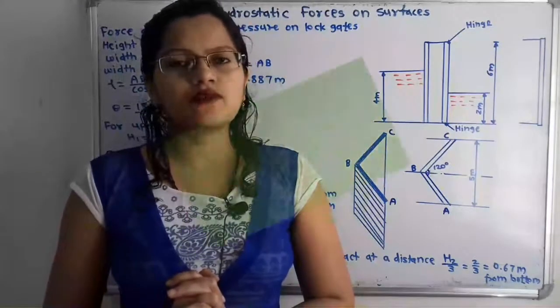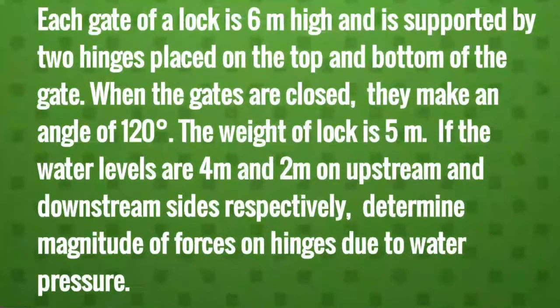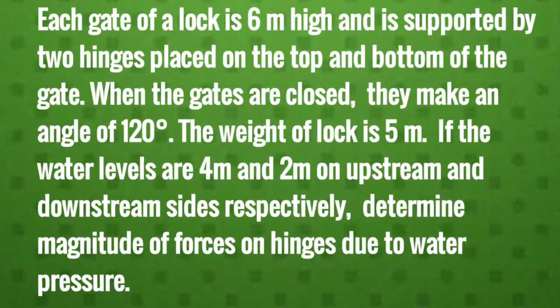First I will read what is the given problem. Each gate of a lock is 6 meters high and is supported by two hinges placed on the top and bottom of the gate. When the gates are closed they make an angle of 120 degrees. The width of the lock is 5 meters. If the water levels are 4 meters and 2 meters on the upstream and downstream sides respectively, determine the magnitudes of the forces on the hinges due to water pressure.